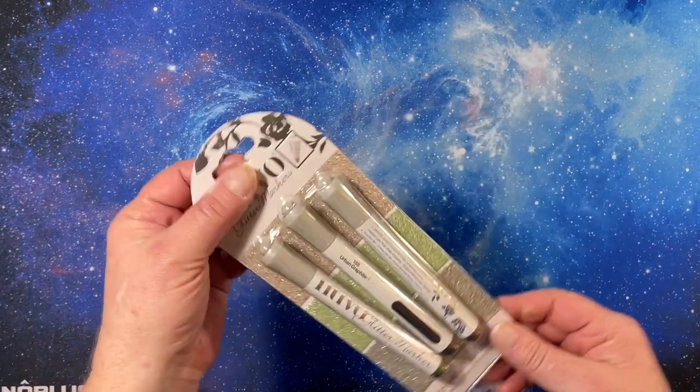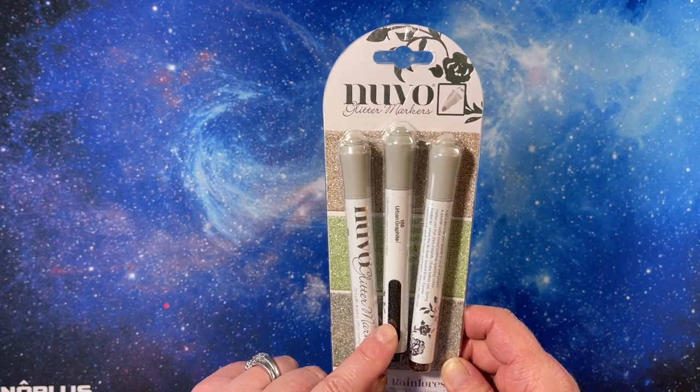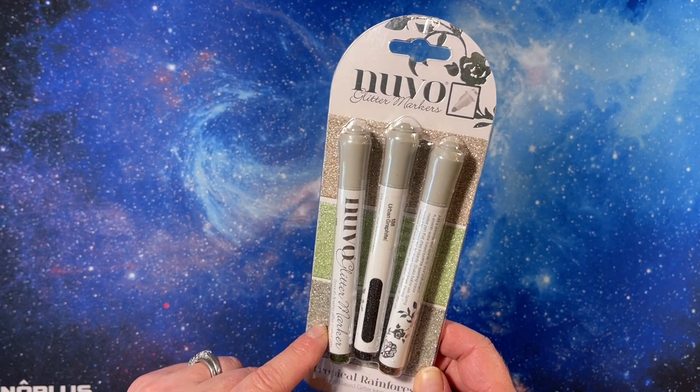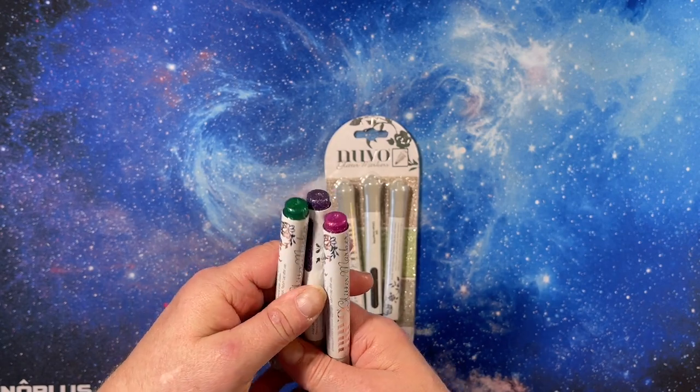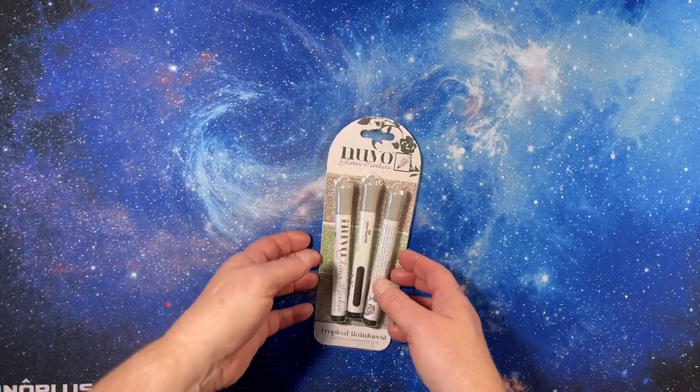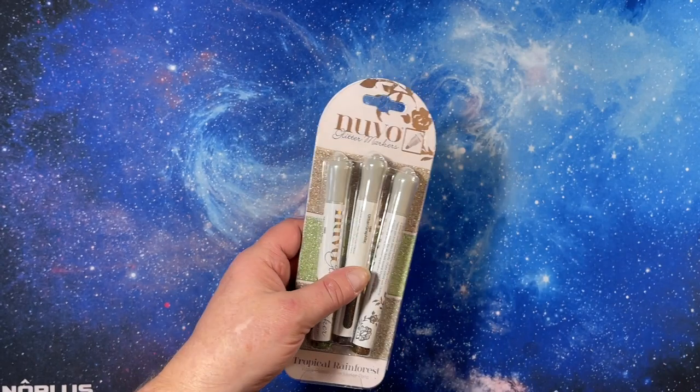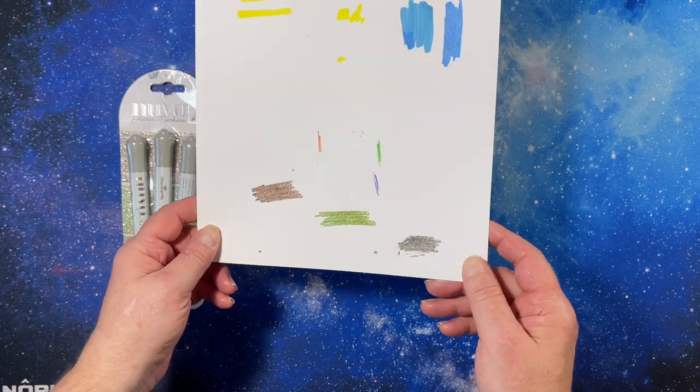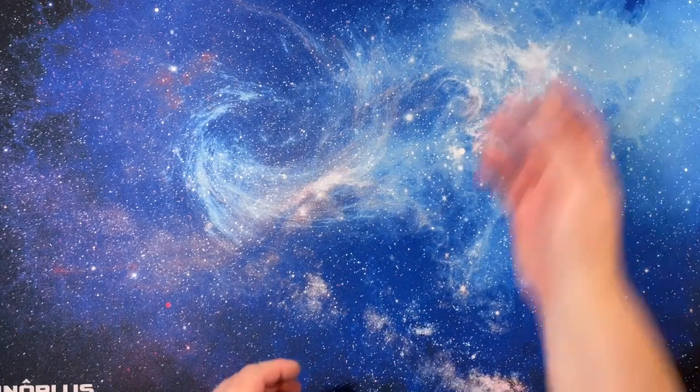I got another set of Nuvo glitter markers because these are ridiculously expensive so I don't get them very often. I only have one other set, the purple green and pink. I don't remember if that's the mermaid set. This is the tropical rainforest and I swatched them. That's what the colors look like. They're awesome. I love Nuvo glitter markers. They are fabulous.